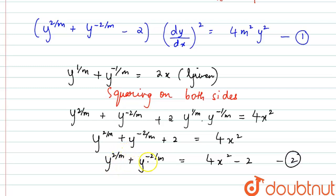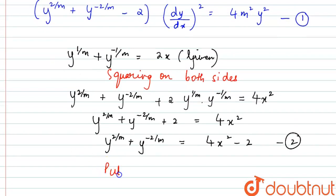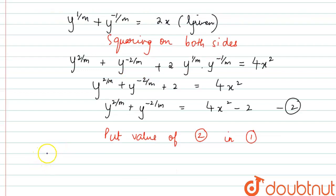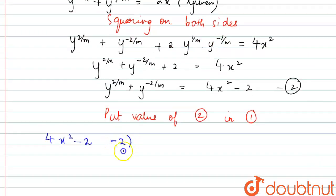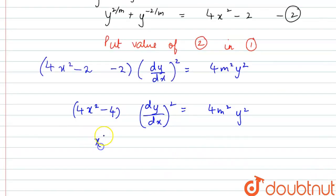We have the value of y^(2/m) + y^(−2/m) from Equation 2, and we substitute it into Equation 1. Upon substitution: (4x² − 2) − 2 into (dy/dx)² = 4m²y², which gives 4x² − 4 into (dy/dx)² = 4m²y². Cancelling 4 from both sides: (x² − 1)(dy/dx)² = m²y².